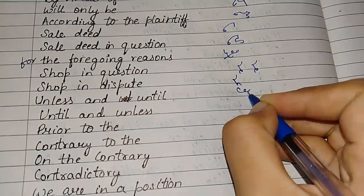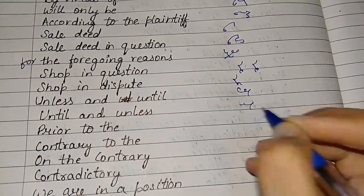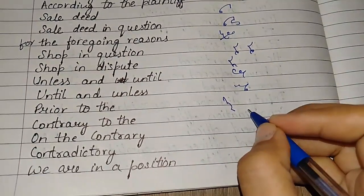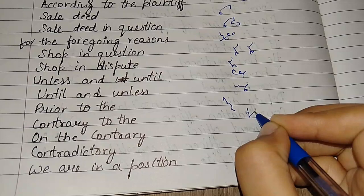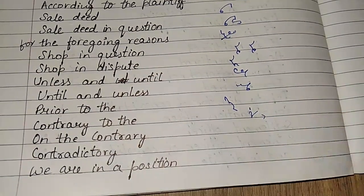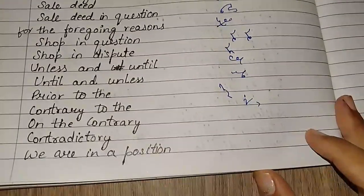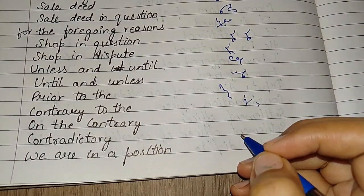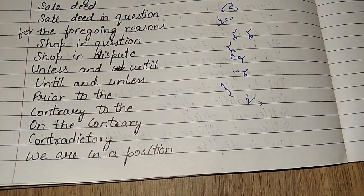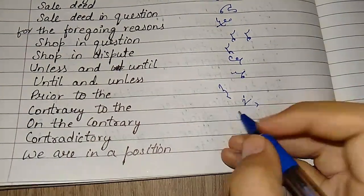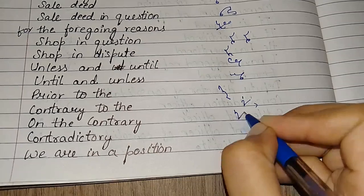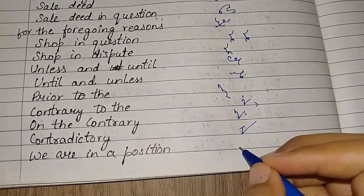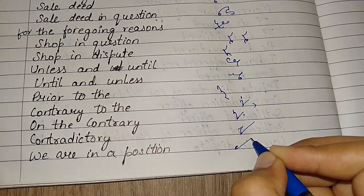Unless and until, until and unless, prior to the contrary, to the contrary. I don't know why I wrote that. You shouldn't write this as a normal phrase, I avoid it as a phrase. There's also a phrase for this, but it will differentiate. On the contrary, contradictory, we are in opposition, we are not in opposition.